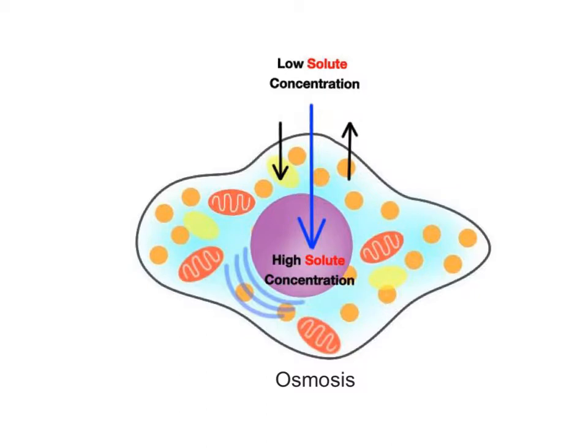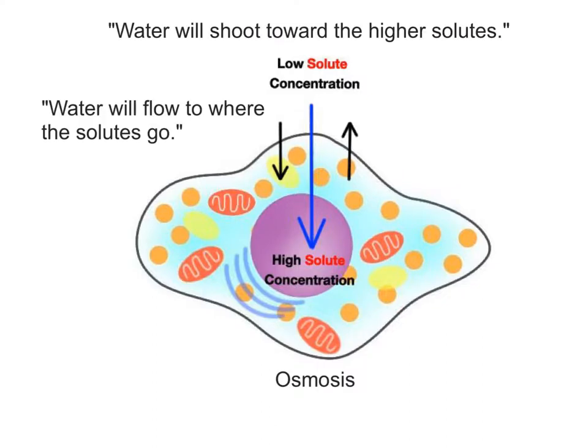We can also think of water's movement during osmosis relative to the concentration of solute on either side of the membrane. Water moves from an area of lower solute concentration on one side of the membrane, a more dilute solution, toward an area of higher solute concentration, a more concentrated solution on the other side. We can remember this movement with a couple of phrases: water will shoot toward the higher solutes, and water will flow to where the solutes go.